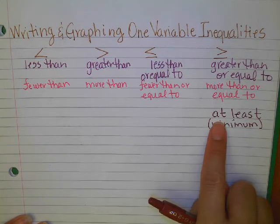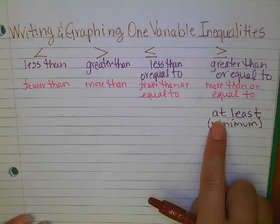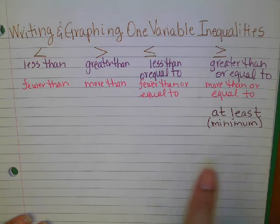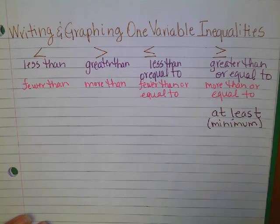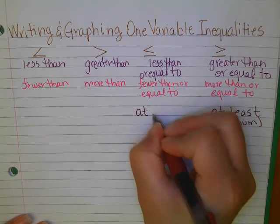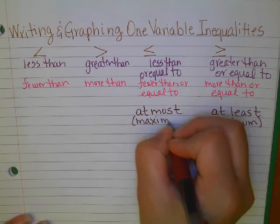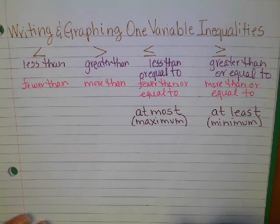Just like 'at least' is a little tricky, so is 'at most.' If I tell you to make corrections on your test and I will at most give you 70, that means that's the most I can give you — so you can earn 70 or less. So the phrase 'at most' refers to the less-than or equal to, because I gave you the maximum. That's the highest you can go, so you can have that or less.